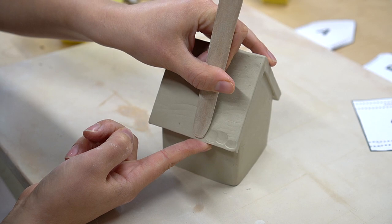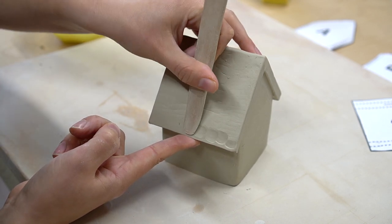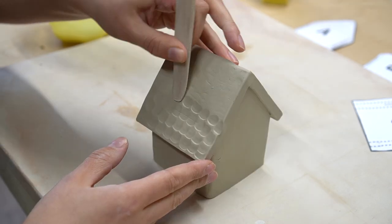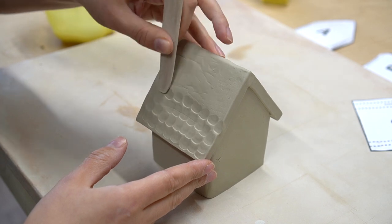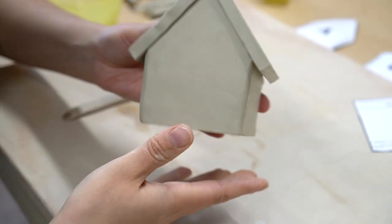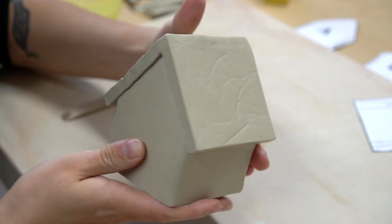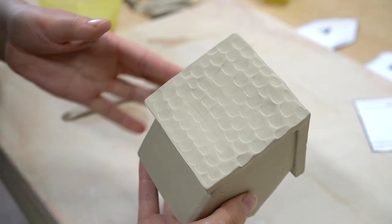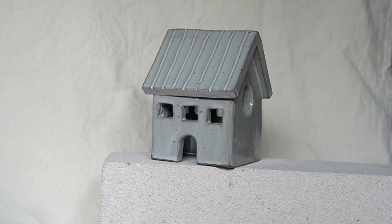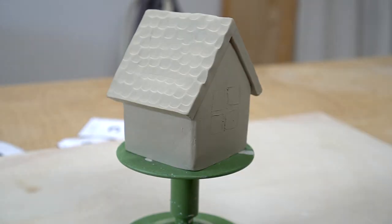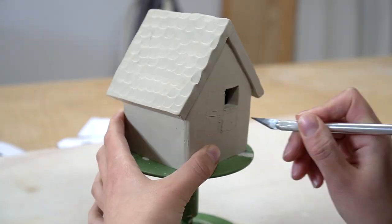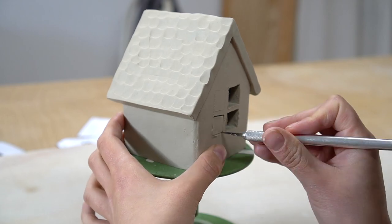Now that your house is assembled you want to add your details. Here the options are endless. You can shape, stamp, carve, or cut. Here I'm using my throwing knife to create a shingles pattern. On this one I carved out lines using a trimming tool. You can also add pieces like a tiny wreath or some bushes out front. It's really endless.